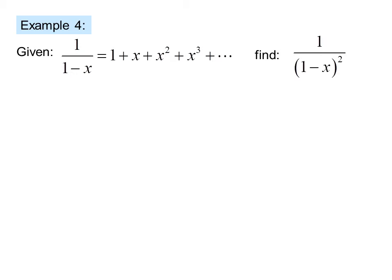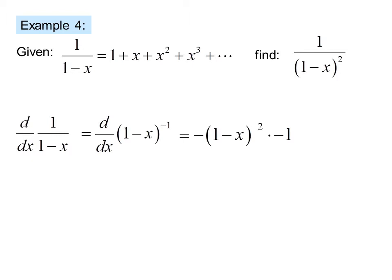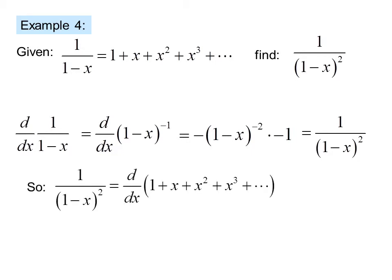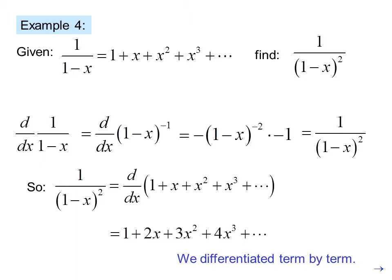Example: given one over one minus x equals one plus x plus x squared plus x cubed, find one over one minus x quantity squared. If I take the derivative with respect to x of one over one minus x, which is the same as d/dx of one minus x to the negative one, I get negative one minus x to the negative two times negative one, or one over one minus x quantity squared, which is what I was looking for. So one over one minus x squared equals the derivative of our original series, evaluated by differentiating term by term.